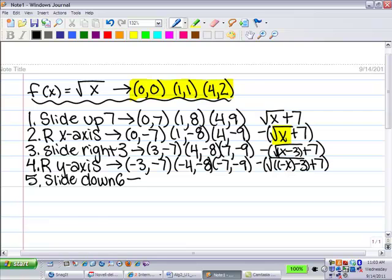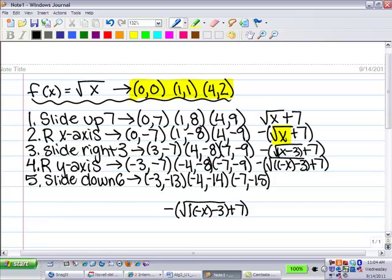And then slid down six. It would be negative three. And then the final answer was negative, and then the parentheses, and negative x subtract three, parentheses, plus seven, and then subtract six. That's the answer.